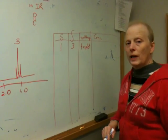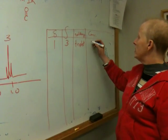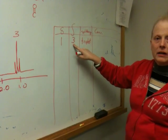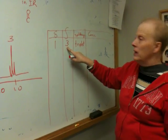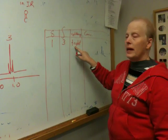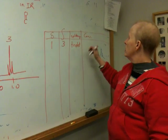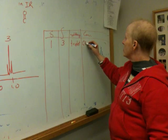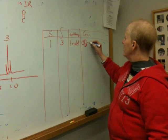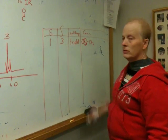This means we have a CH3, right? Three identical hydrogens, CH3, next to how many? This means we're next to two, CH2. So we are observing a CH3 next to a CH2.